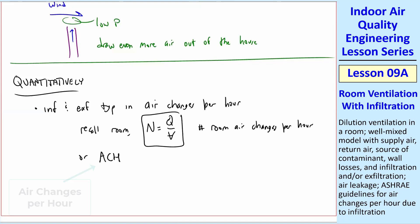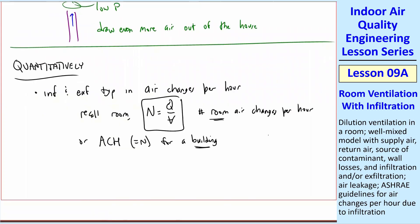People also use ACH is the same as N, but it's typically used for a building, whereas N is used for a room, although some people use this interchangeably. I will use N_INF for the infiltration room air changes, and all of these have units of one over hour.